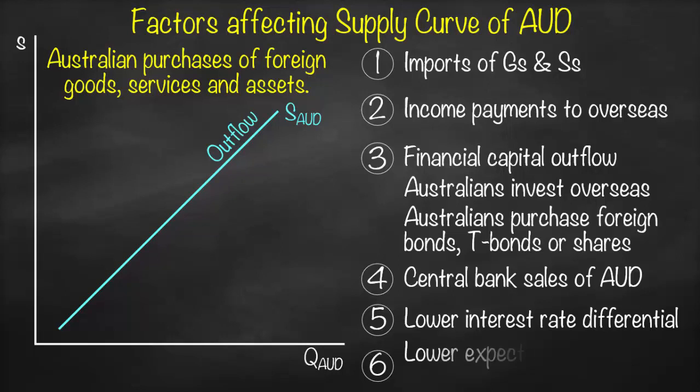Another example is a lower expected future exchange rate. If we expect the Australian dollar to depreciate in the future, it's better to sell it now at a higher rate and buy it back later at a lower rate. Holding it would result in a loss, so it's rational to sell now. This is cash outflow and will affect the supply curve. Remember: higher outflow means higher supply — shift to the right; lower outflow means lower supply — shift to the left.